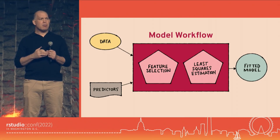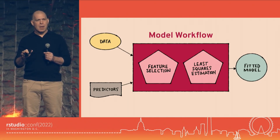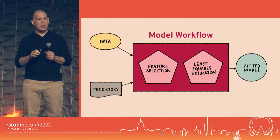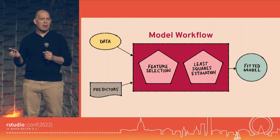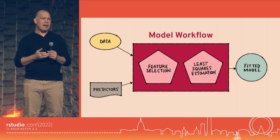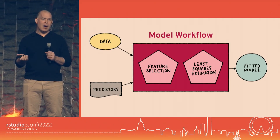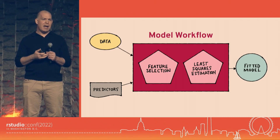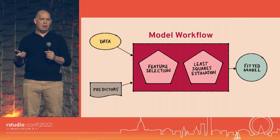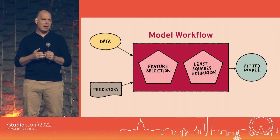The answer is probably B — ten times. But let's say this model was really good and you liked it, and you want to put it in Vetiver and deploy it. What you'd actually end up doing is running the feature selection an eleventh time, because to build the final model you have to do feature selection on the entire dataset and hand that data over to lm() run on the entire dataset. So really, the answer was either B or C.